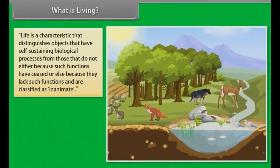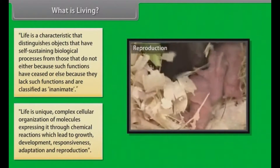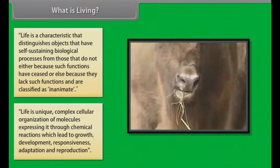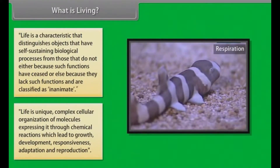Life is a characteristic that distinguishes objects that have self-sustaining biological processes from those that do not, either because such functions have ceased, or because they lack such functions and are classified as inanimate. Life is a unique, complex cellular organization of molecules, expressing itself through chemical reactions which lead to growth, development, responsiveness, adaptation, and reproduction.